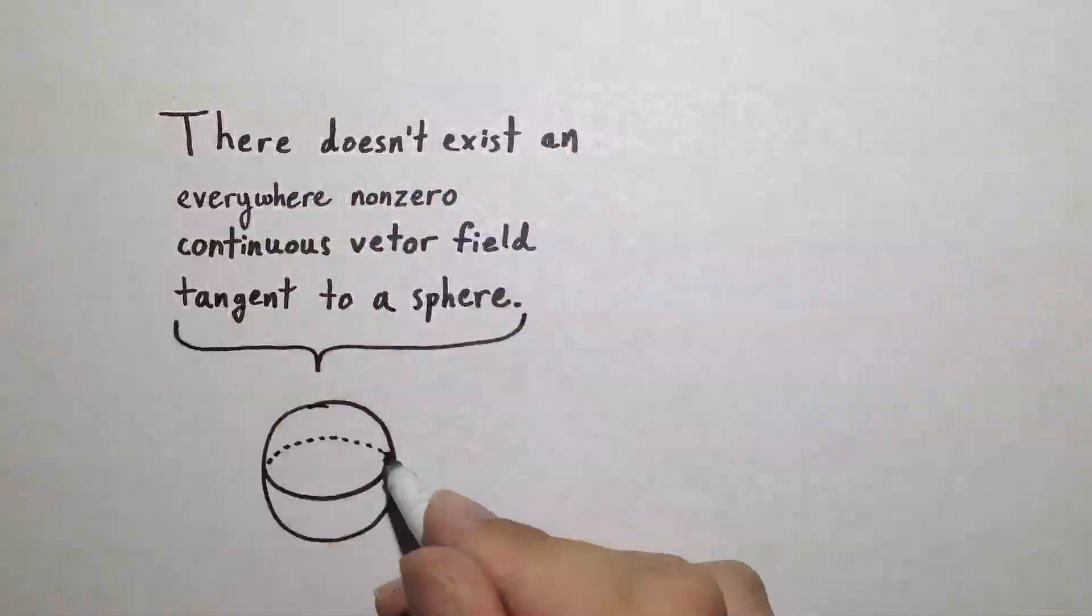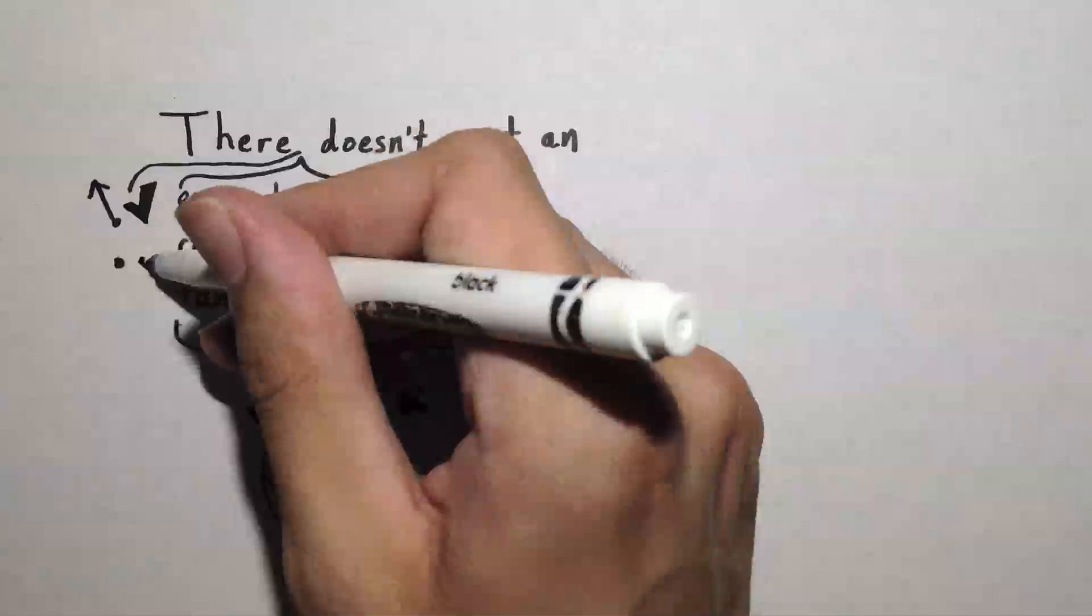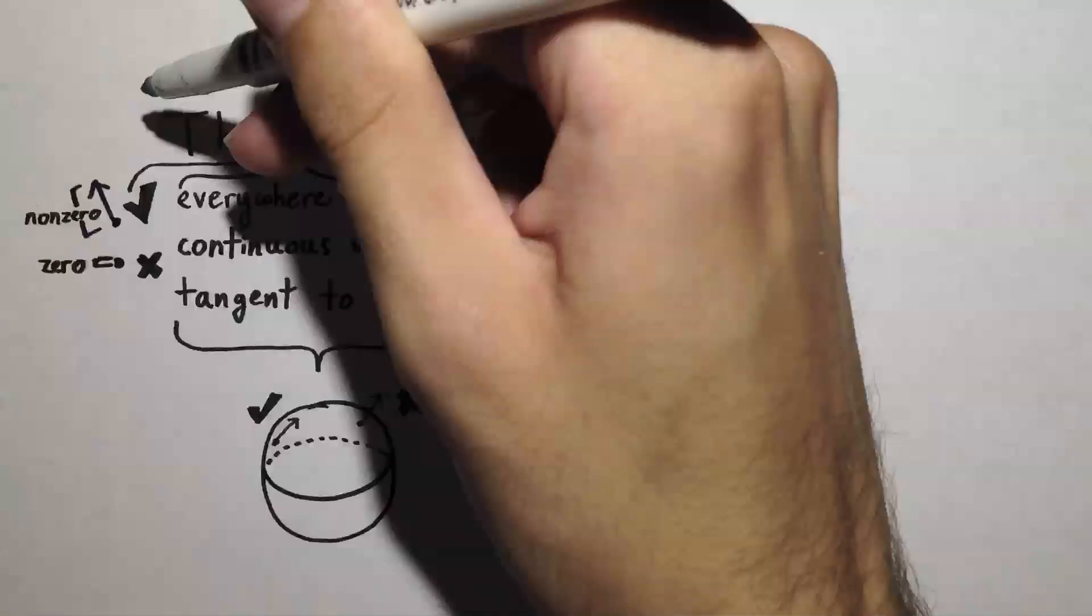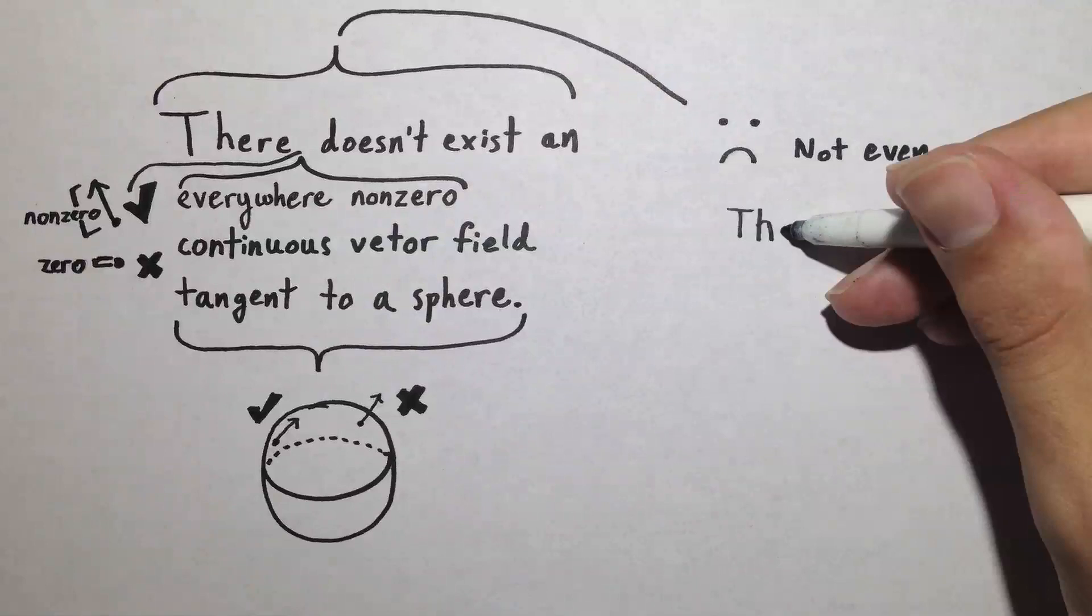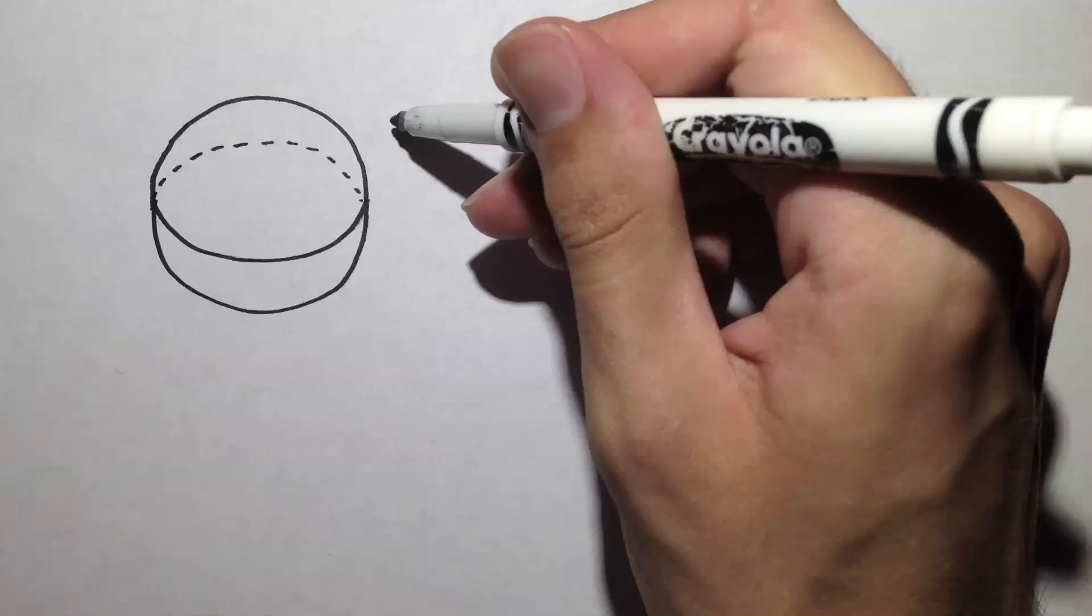Finally, everywhere non-zero means that none of our vectors have length zero. And there doesn't exist means that there isn't one. Before jumping in, let's take a look at continuous vector fields on a simpler surface, a disk.